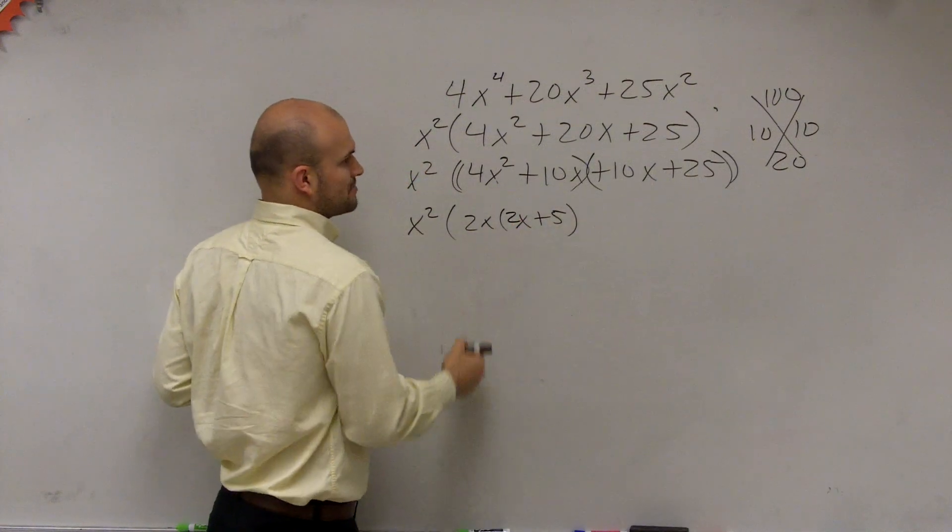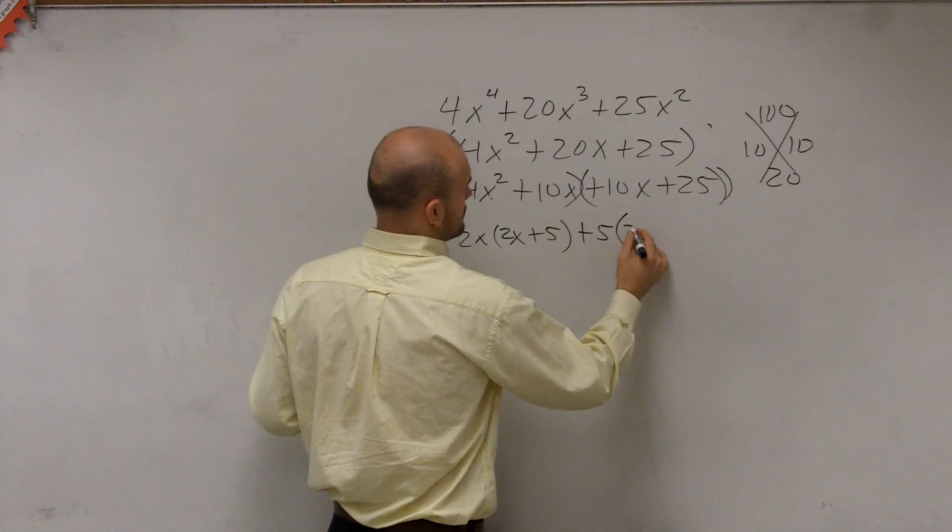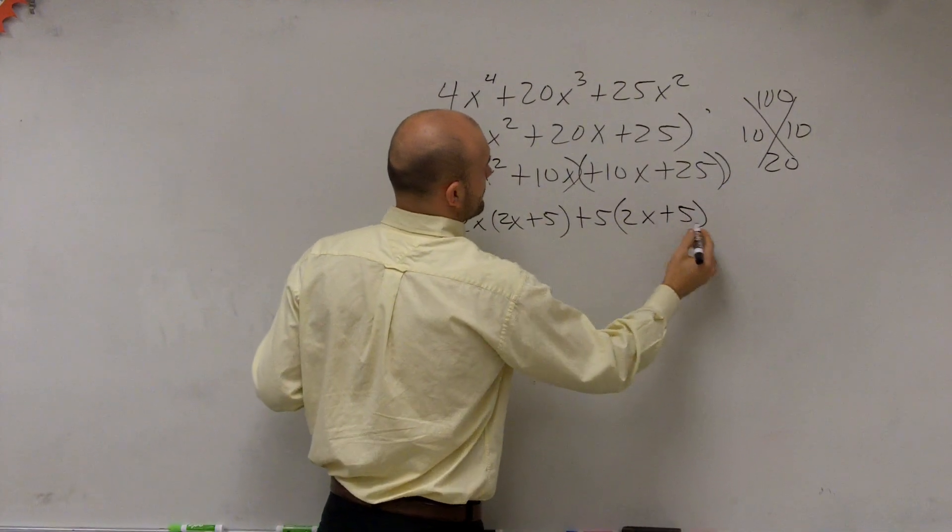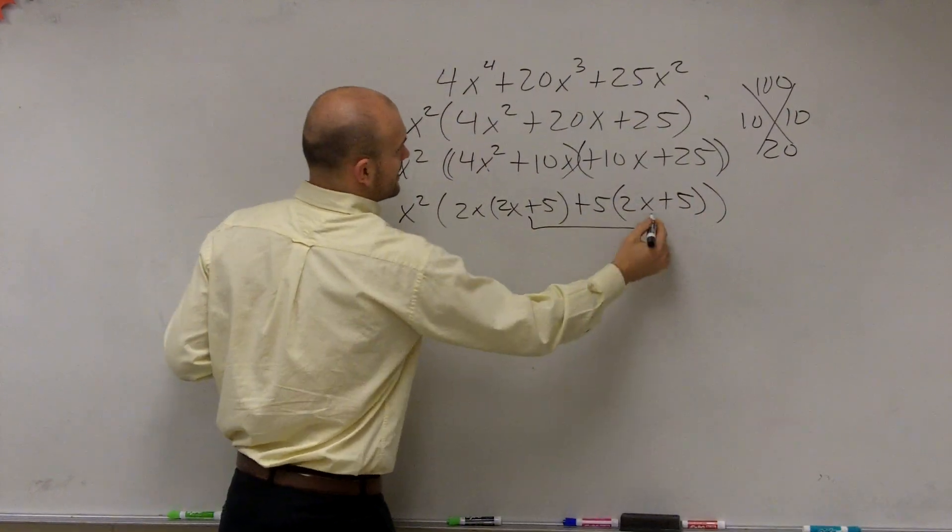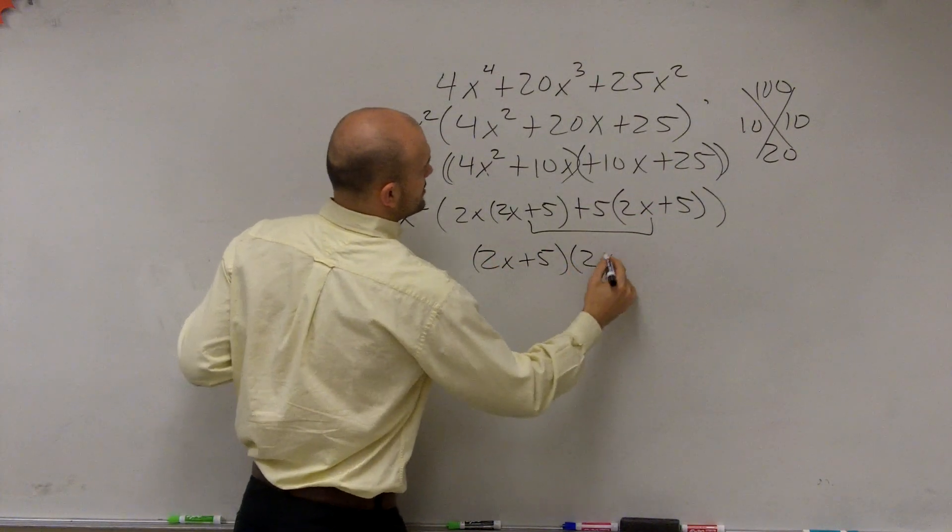Sorry, when you factor that left, you're left with a 2x plus 5. Factor out a positive 5, and you're left with a 2x plus 5. So then you factor out what they have in common again. So you get a 2x plus 5 times a 2x plus 5.